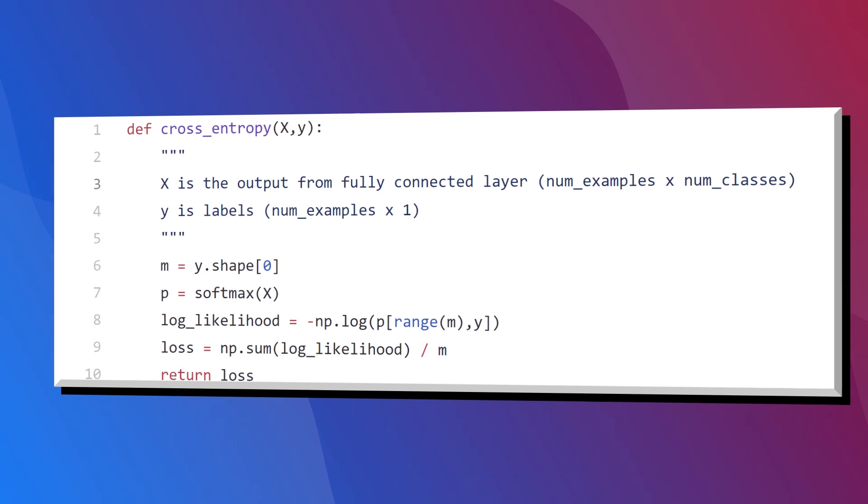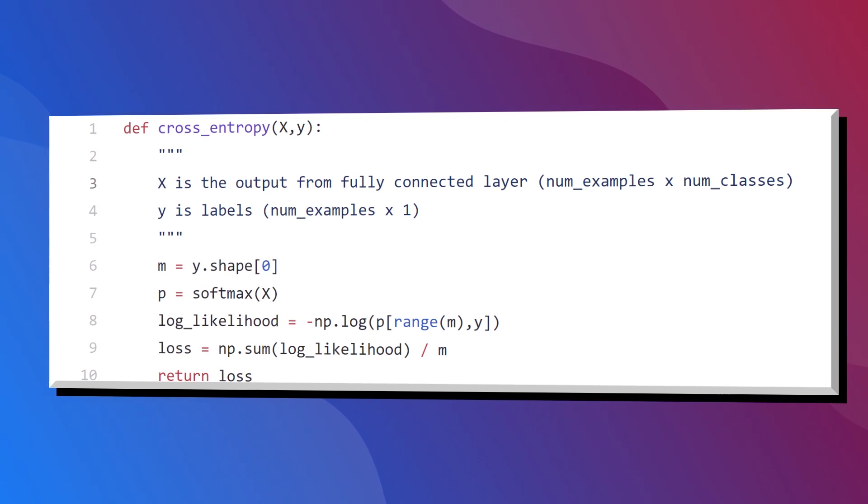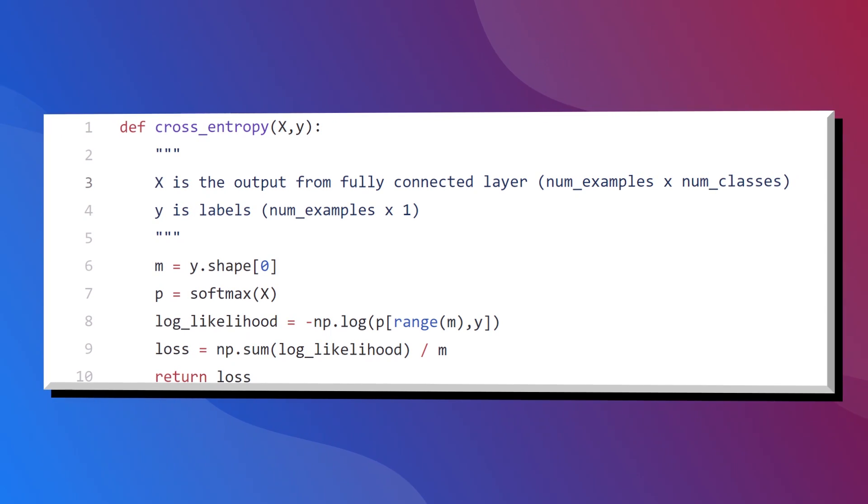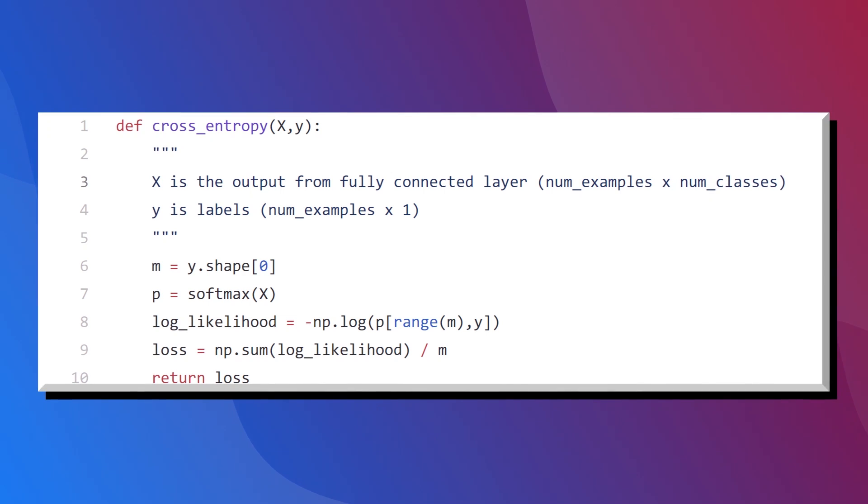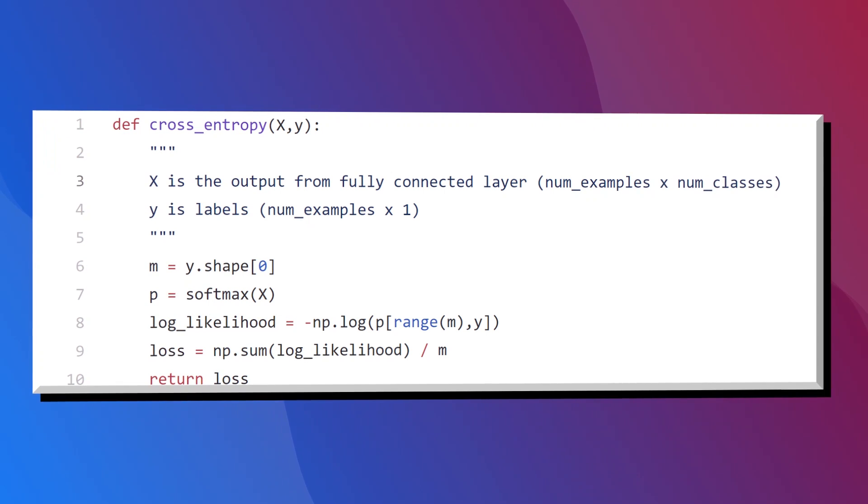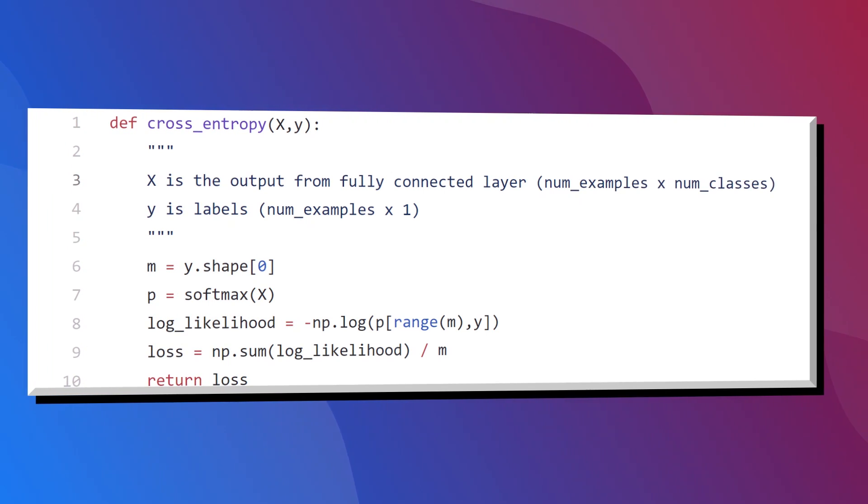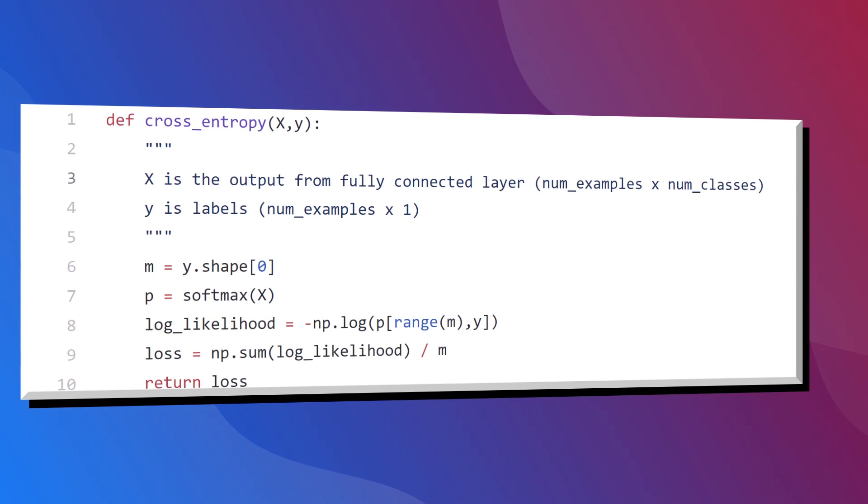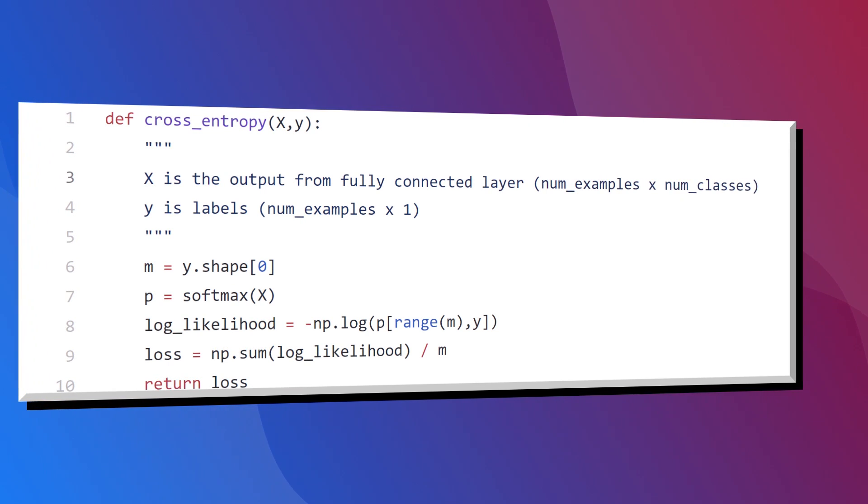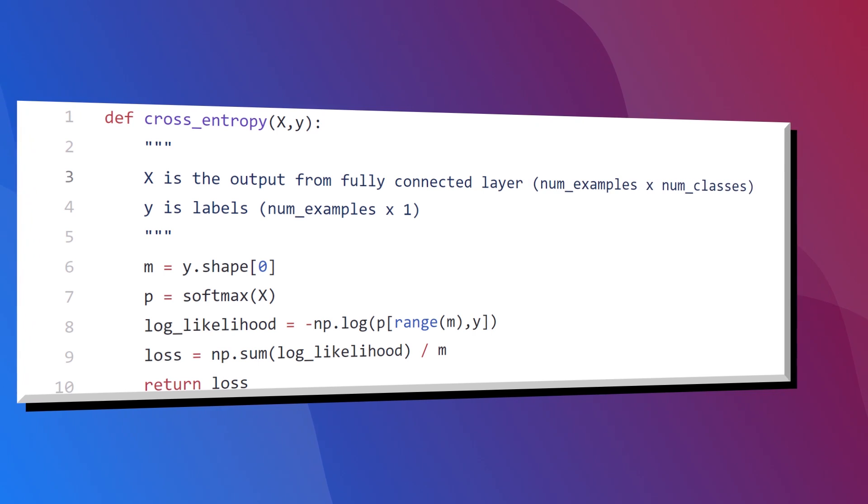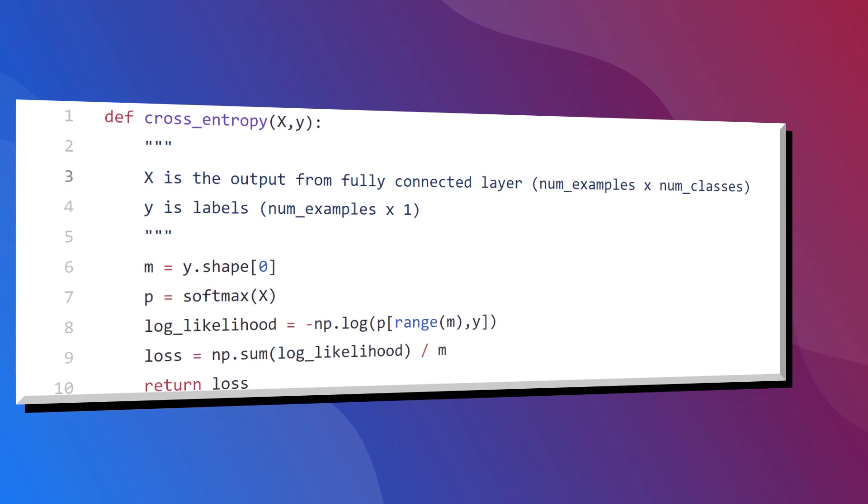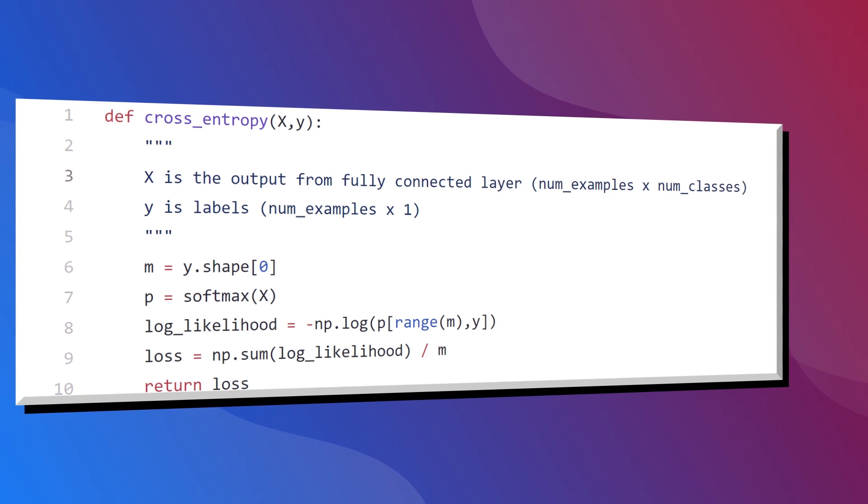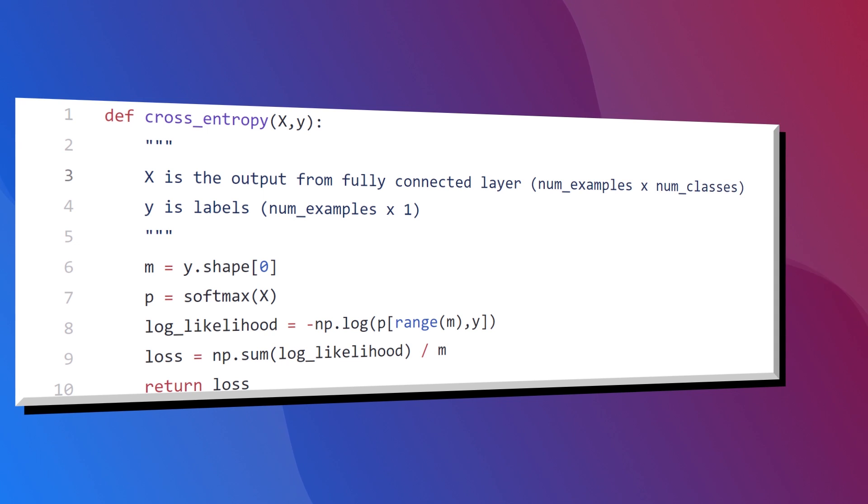We can denote it using sigma notation. So we'll sum up the negative logs of all the predicted probabilities multiplied by y for as many classes as there are and that will give us our error. It uses the negative log to give us an easy metric for comparisons. That's because the positive log of numbers less than 1 returns negative values, which can be confusing to work with when comparing the performance of two different models.